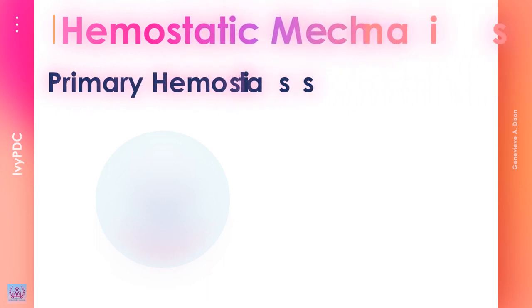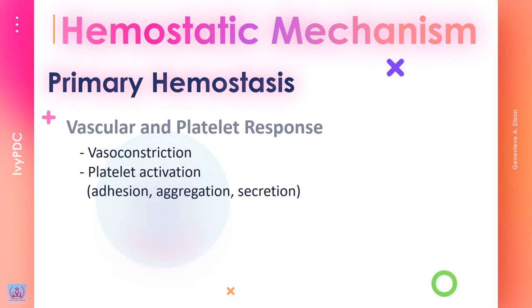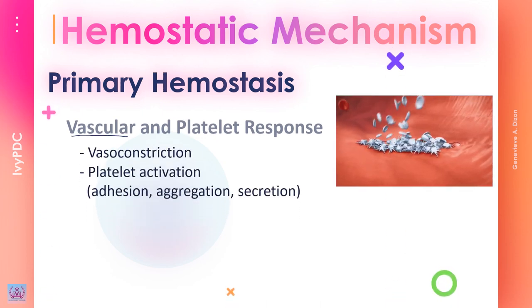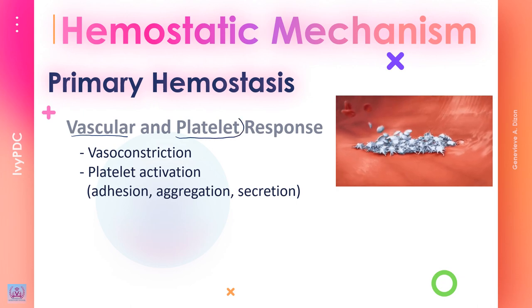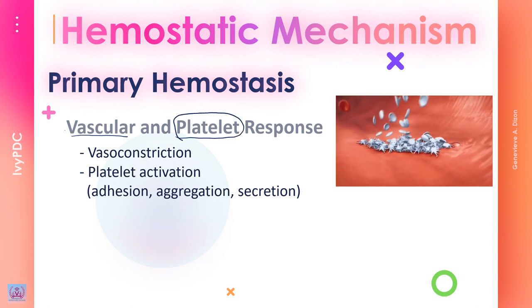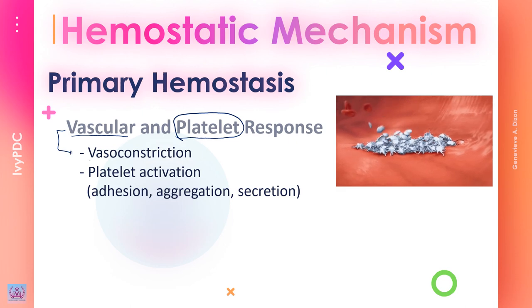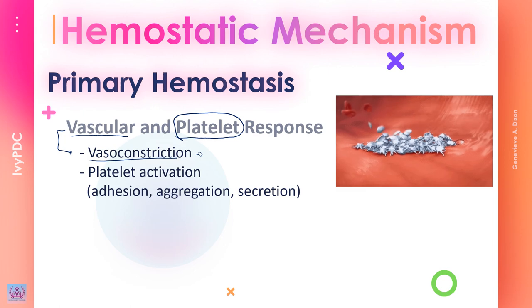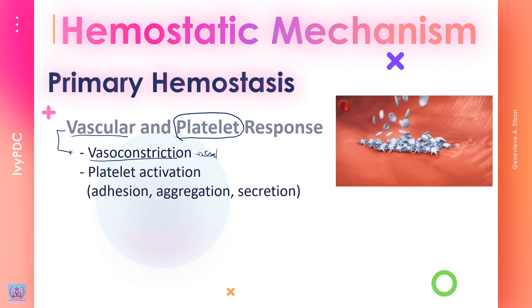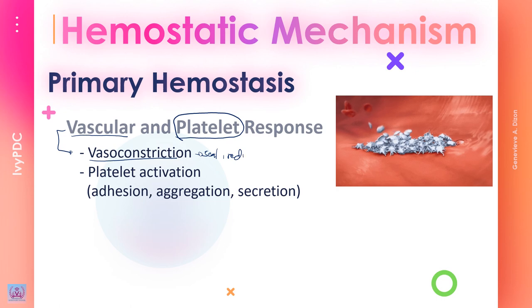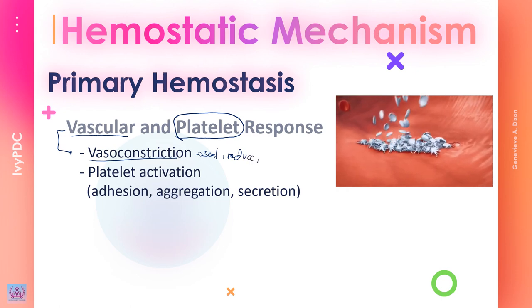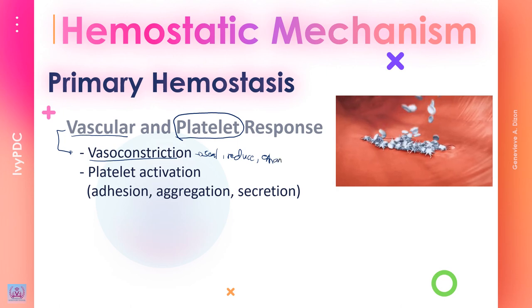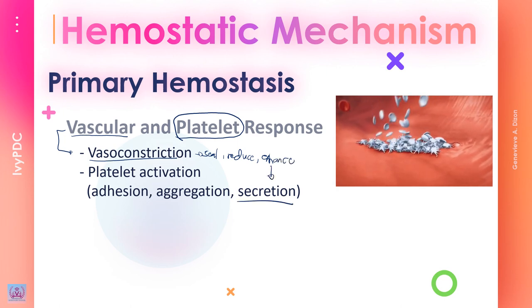In primary hemostasis, two components are involved: the vascular component and the intravascular component — specifically the platelets. The blood vessels' function in primary hemostasis is vasoconstriction. The constriction of the blood vessels seals the wound and reduces blood flow. Vasoconstriction also serves to enhance the chemicals secreted by the platelets.